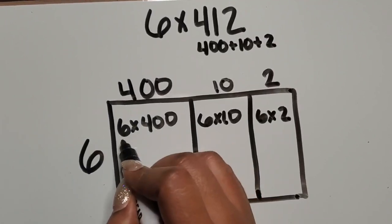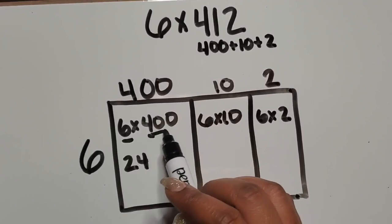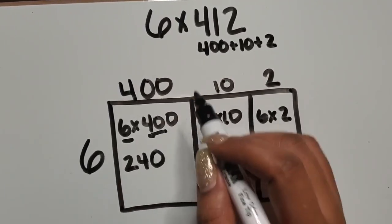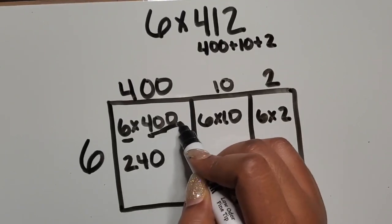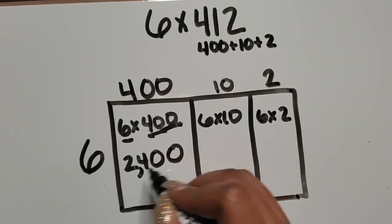So I know 6 times 4 is 24. If I had 40, that's 10 times greater than 24, so then that would be 240. Then I have 400, which is 10 times greater than that, which would be 2,400.